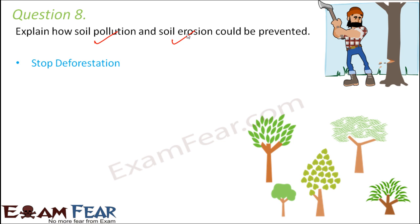Some of the things that we can do: stop deforestation — stop cutting down trees and start planting more and more trees. If there are more trees, the chances of erosion are very low because the roots of the trees will firmly hold the soil.